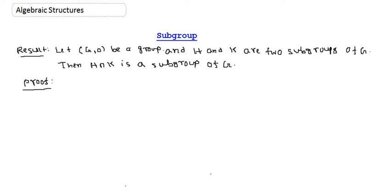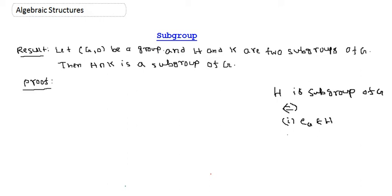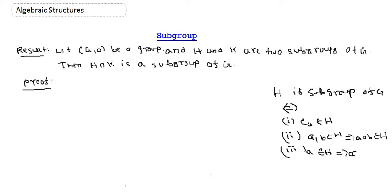To use the proof, let me remind you when we say a subset is a subgroup of a group. H is a subgroup of G if and only if three conditions are satisfied: it contains the identity element of G; if we take any two elements A, B from H, then A composed with B belongs to H; and for all A belonging to H, the inverse element also belongs to H.